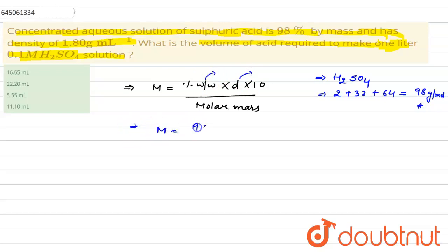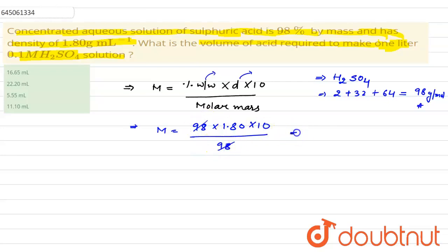So molarity would be: percentage weight by weight is 98, density is 1.80, into 10, divided by 98. This gives a molarity of 18 molar. This is the initial molarity. Now we know the molarity equation.